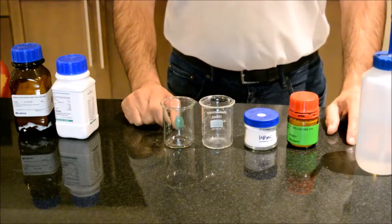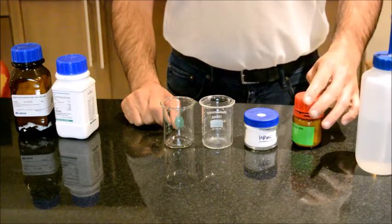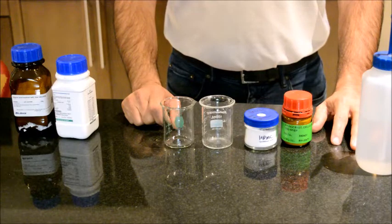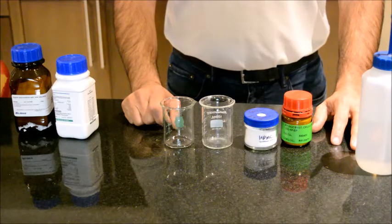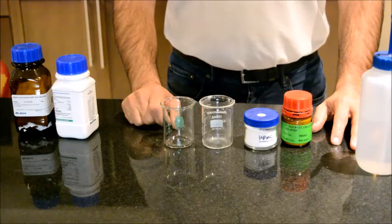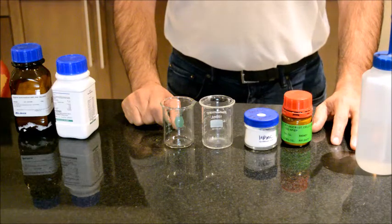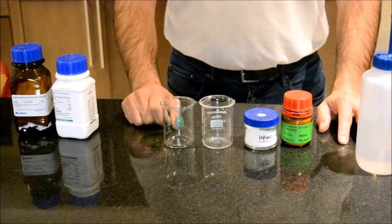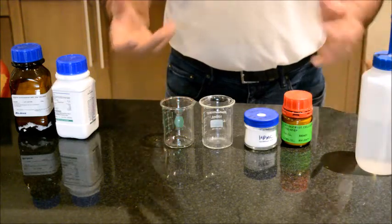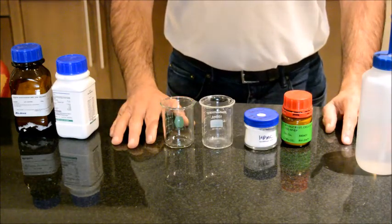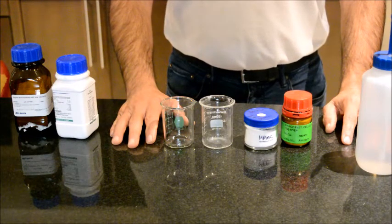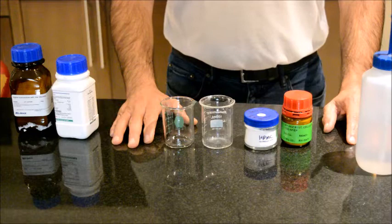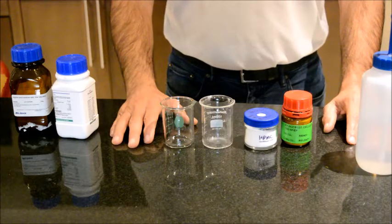So this video is a request. HPMC and microcrystalline cellulose are excipients used in solid dosage forms, also in liquids or suspensions, and depending on the dosage form their function will be different. In this viewer's case, he's definitely working on tablets, so for his case the function of these two excipients are binders. They hold the powders together so the tablet can retain its physical structure.